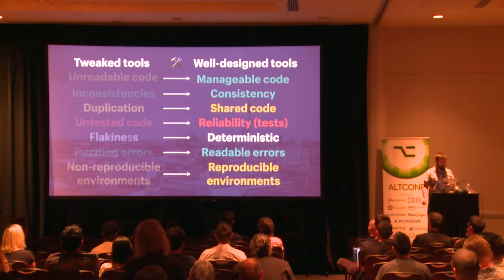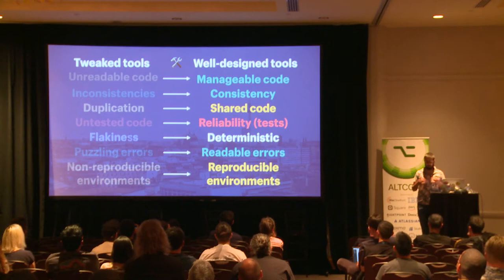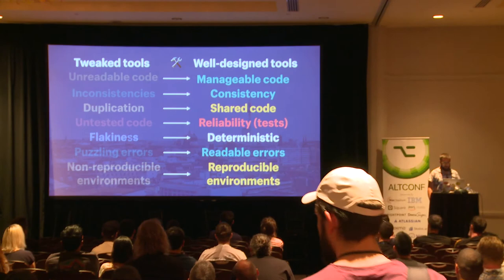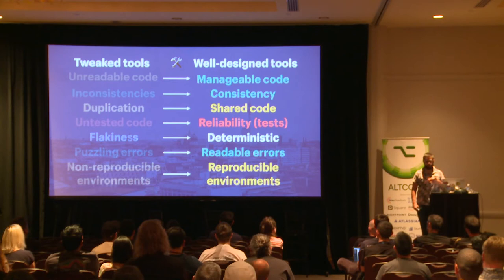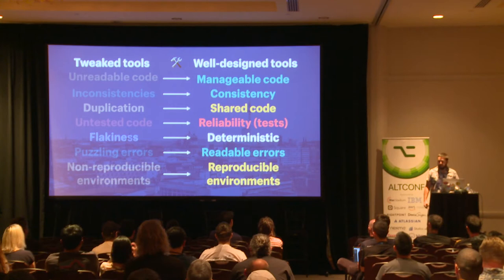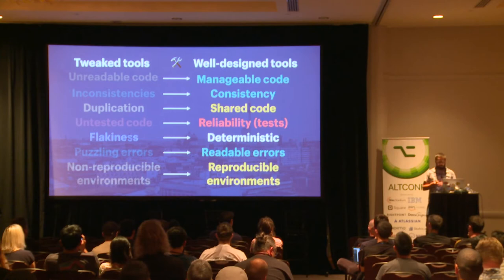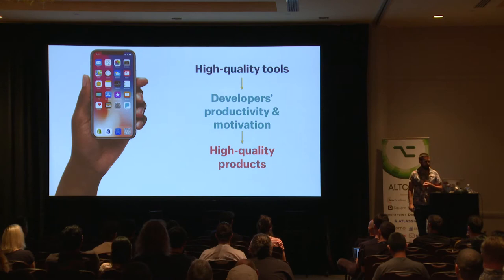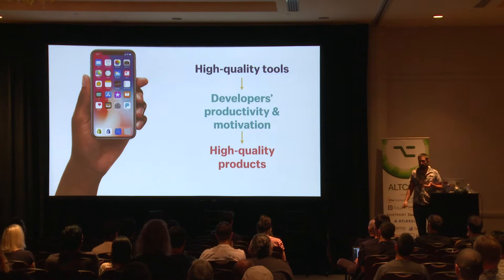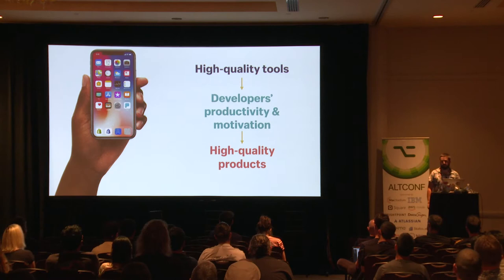We don't want tweaked tools. We want well-designed tools because those are manageable—you can see the code, understand it. They are consistent, so you understand everything across the tool. You can share code without duplication. You can build tools that are reliable, that you can test, and make sure they do what developers expect. They are deterministic—run the same tool several times and get the same results. Errors are readable. And you can have reproducible environments—what happens on CI also happens locally. High-quality tools mean developers are productive, motivated, and will create great products.